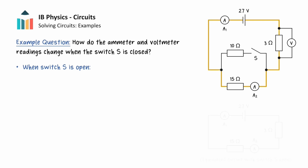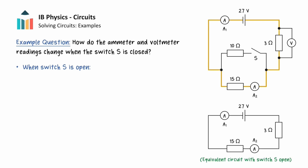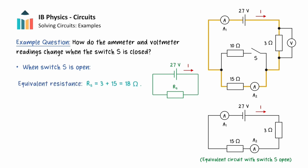Therefore, we effectively have this circuit with the 3 ohm and 15 ohm resistors connected in series, so the current in both of the ammeters will be the same. The total resistance of these two resistors in series will be equal to their sum, so this circuit will have an equivalent resistance of 18 ohms.